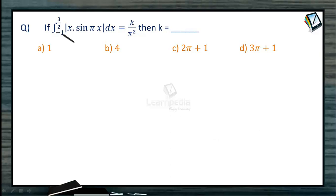Now the value of integral minus 1 to 3 by 2 mod of x sin pi x dx is given to be k by pi square and we need to find the value of k. First let us evaluate the given definite integral.